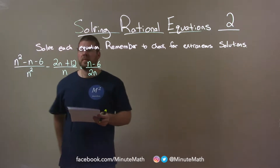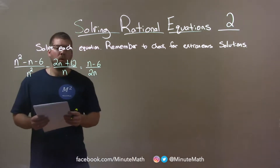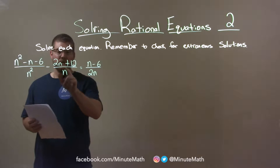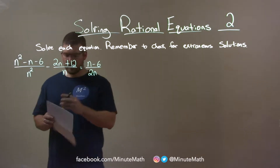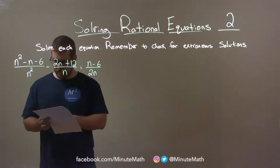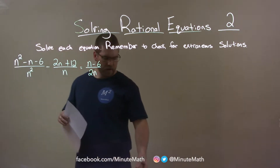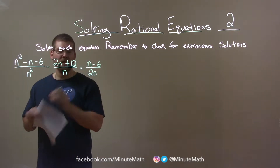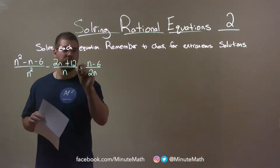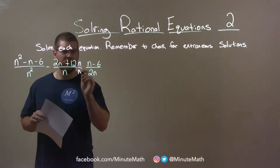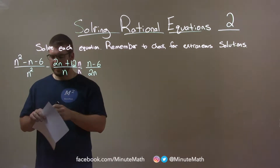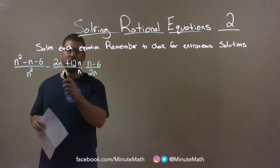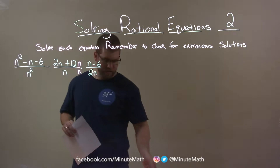Well, one thing I want to do is have the same base when I add these together. So, to do that, if I multiply the second fraction by n over n, that will give us a denominator of n squared, meaning that we can add them together.